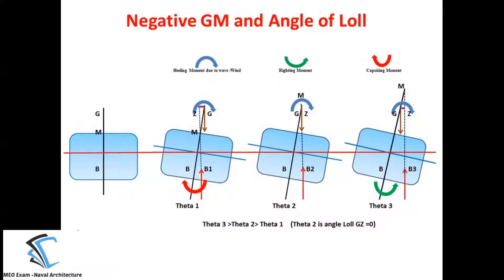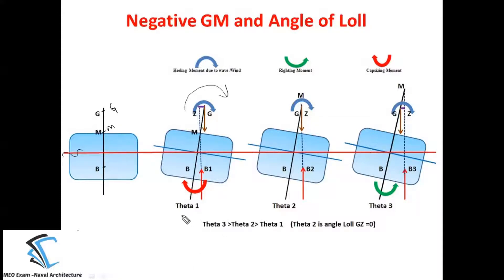Let us consider the ship is at 0° inclination — the upright condition — where the center of buoyancy B is the centroid of the underwater volume, M is the metacenter, and G is the center of gravity, with initial metacentric height being negative. Due to an external agency like wind or wave from the port side, a heeling moment generates towards the starboard side and the ship inclines at 5°. There will be an increment in volume towards the starboard side, so the overall centroid of the underwater volume shifts to starboard — we call this new center of buoyancy B1.